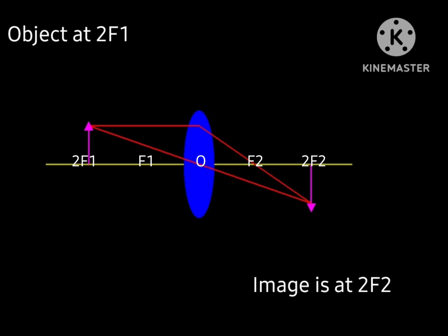To get the image of the object we need to consider 2 rays which are started from the head of the object. First ray is parallel to principal axis which passes through focus after refraction.